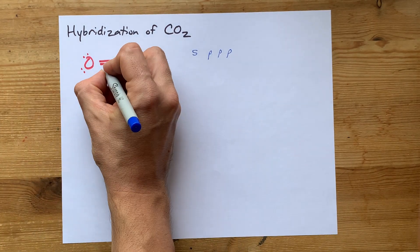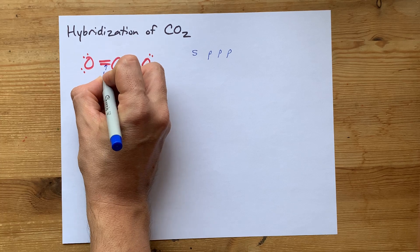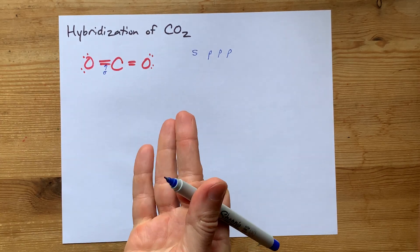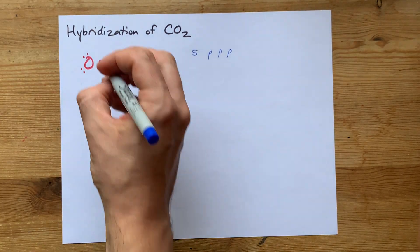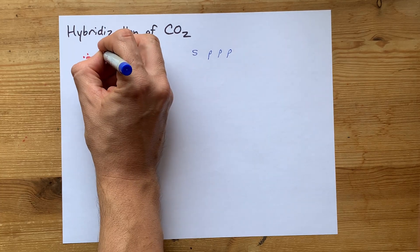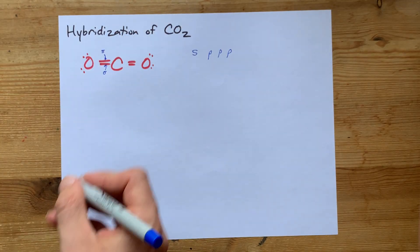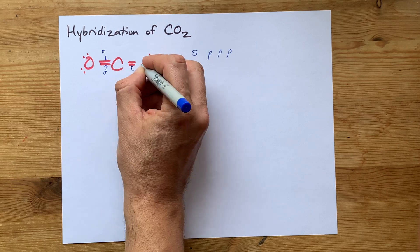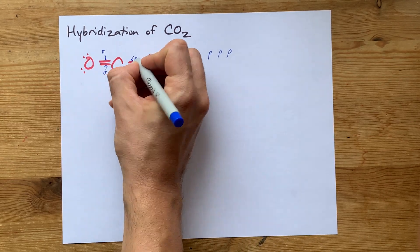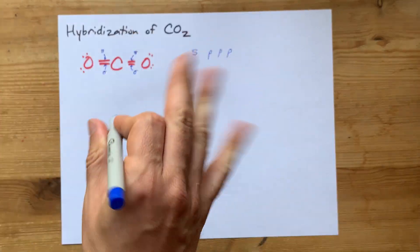Between the carbon and oxygen here, let's say the first bond between them is sigma. The first bond between any two atoms is always sigma, and then we have one pi bond here. Same on the other side. The first bond between any two atoms is sigma, and then the other one is pi.